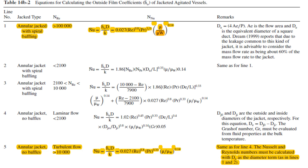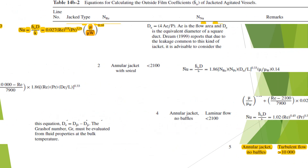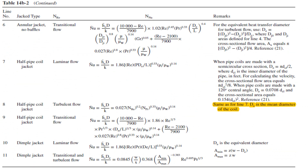The third relation is for Reynolds number in the transition range between laminar and turbulent flow. The fourth relation is for the annular jacket with no baffles — the above three relationships apply when the jacket is provided with baffles. The fourth relation is for the annular jacket with no baffle for laminar flow, and the fifth relation is for the annular jacket with no baffles for turbulent flow. There is also a relation for the diagonal jacket with no baffle for transitional flow.